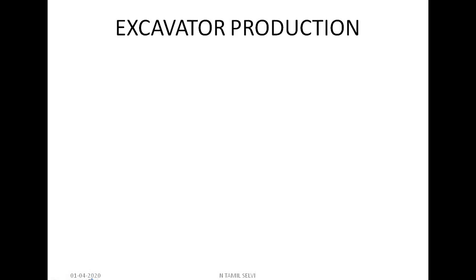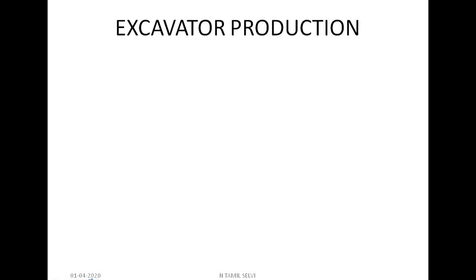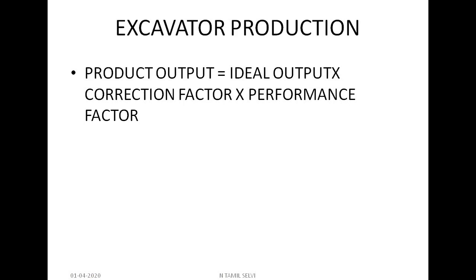Excavator production: the basic formula is — actual product output is equal to ideal output multiplied by correction factor multiplied by performance factor. The correction factor will vary depending upon the soil, and the performance factor depends on how that particular machinery is performing.